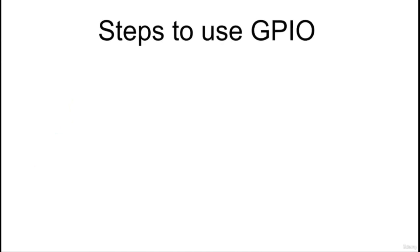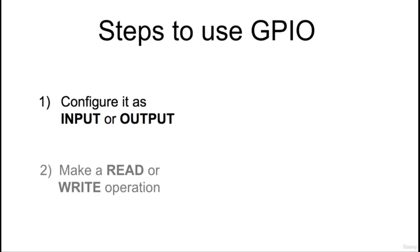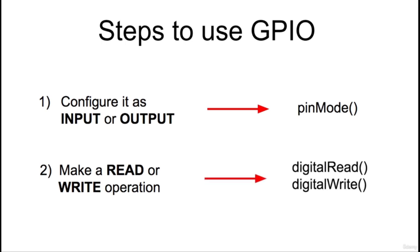To make use of a digital pin, we need to fulfill two steps: first, configure it as an input or output; and second, make use of the read and write operations to interact with other components. The corresponding functions in the Arduino language are: pinMode to configure a digital pin, which must be called for each digital pin used in the sketch; digitalRead to read the state of a pin; and digitalWrite to write the state of a pin.